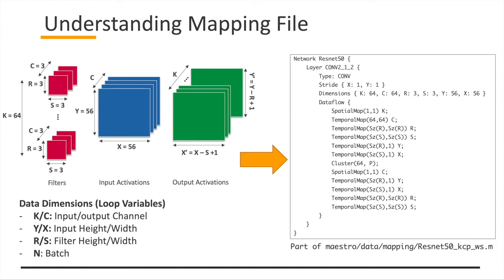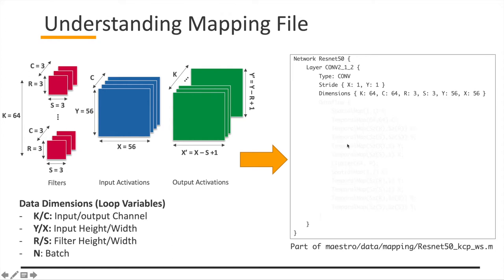You also have to specify a mapping file to run Maestro. The mapping file is a little more complicated than the hardware file, but not too much, so let me explain one by one. Imagine you want to create a mapping file for VGG or ResNet50 and a specific conv layer, conv2_1_2. It has a 3x3x3 filter — 64 of them — and the input size is 56x56x3. First, we have to specify the DNN layer. You can put any name for the layer, but you have to specify the right type as conv (convolution), the right stride, and the required dimensions.